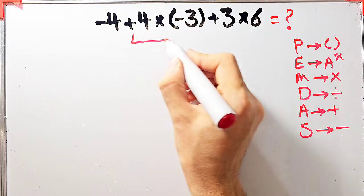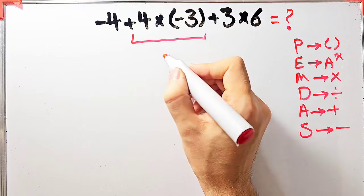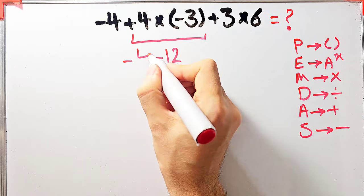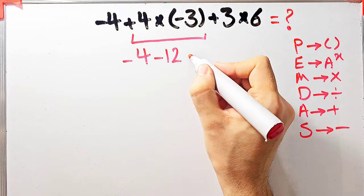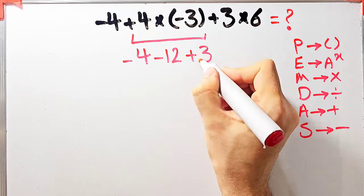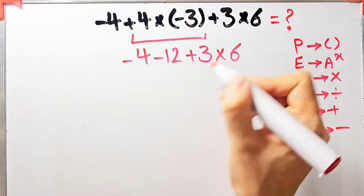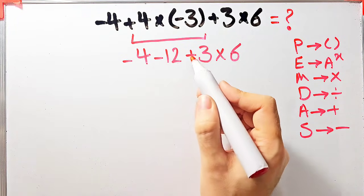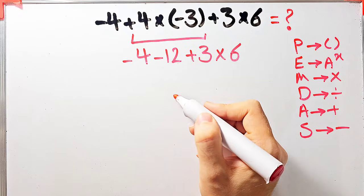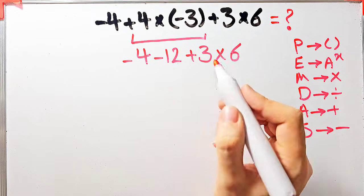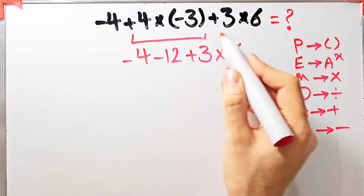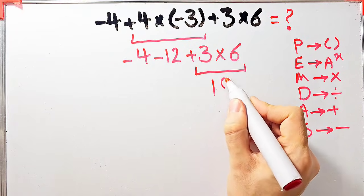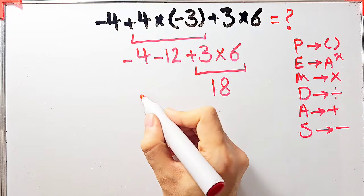According to the PEMDAS rule, first we simplify the multiplications. 4 times negative 3 equals negative 12. Now we have negative 4 minus 12 plus 3 times 6. Again we simplify the multiplication: 3 times 6 equals 18. Now we have negative 4 minus 12 plus 18.